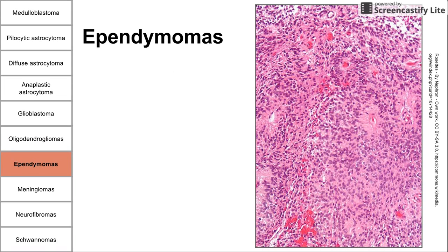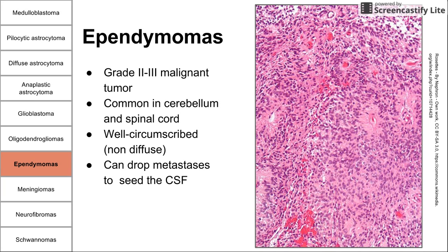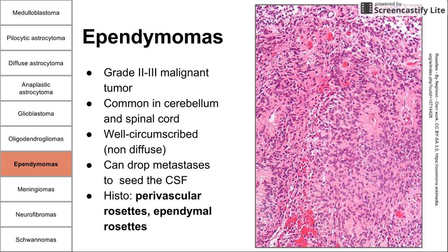Next is ependymoma, a tumor of ependymal cells. This is a grade 2 to 3 malignant tumor found in the cerebellum and spinal cord below the tectorial line. It is well-circumscribed and not diffuse — it won't be invading. Like medulloblastoma, it can drop metastases and seed the CSF. On histology, we see characteristic rosettes: perivascular rosettes, which are ependymal cells surrounding vasculature, and ependymal rosettes, which surround a small piece of ventricle as ependymal cells normally do.